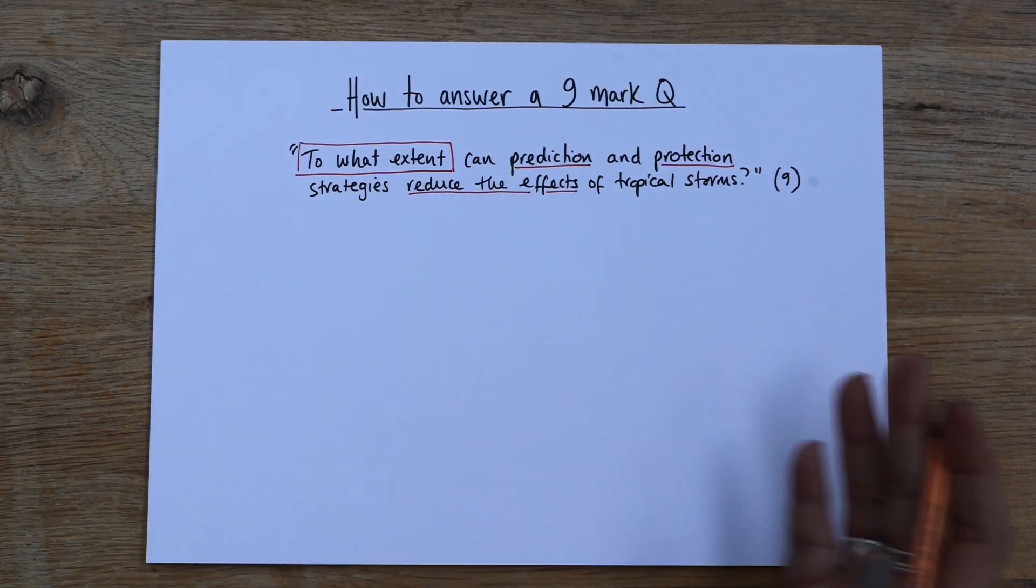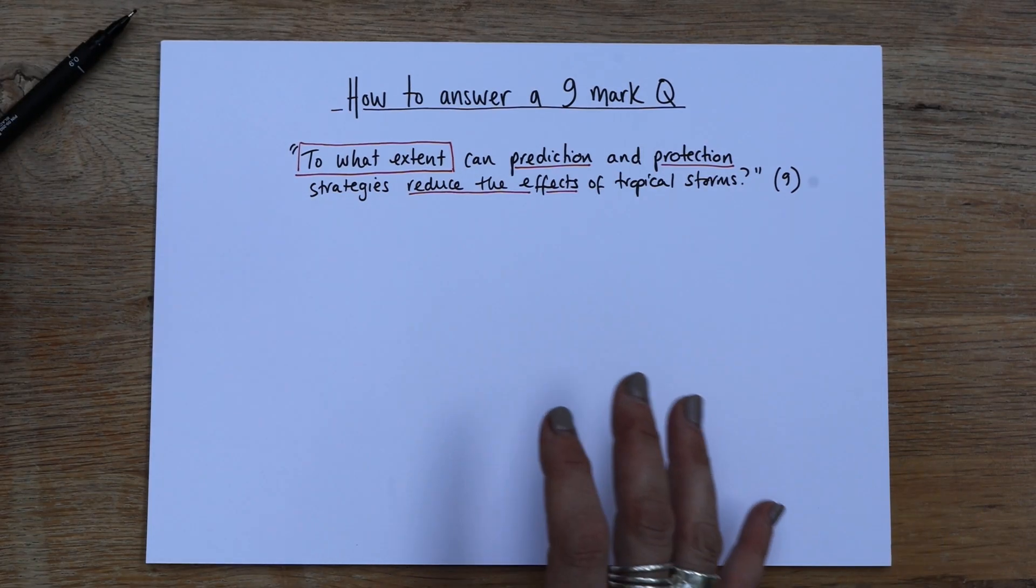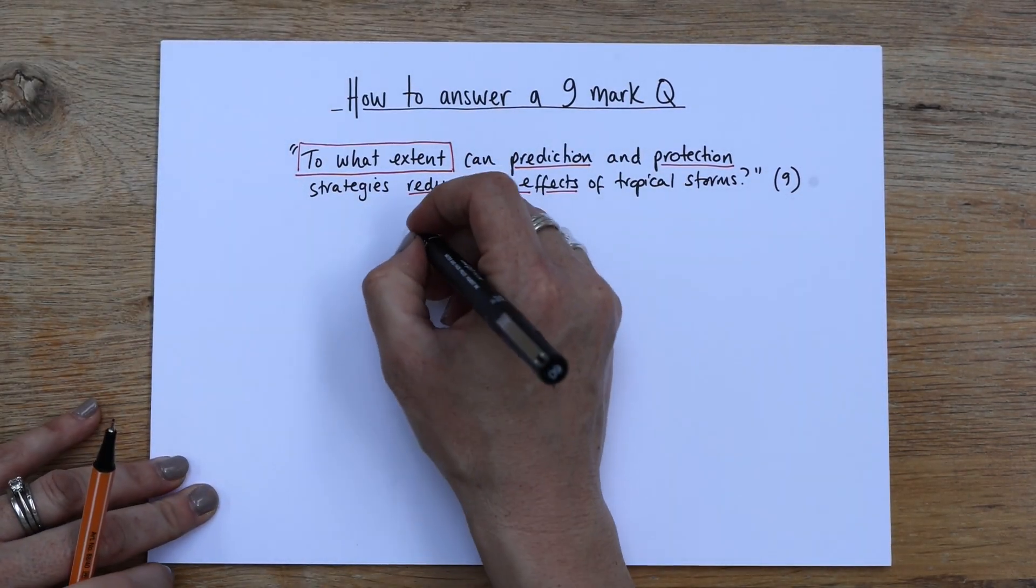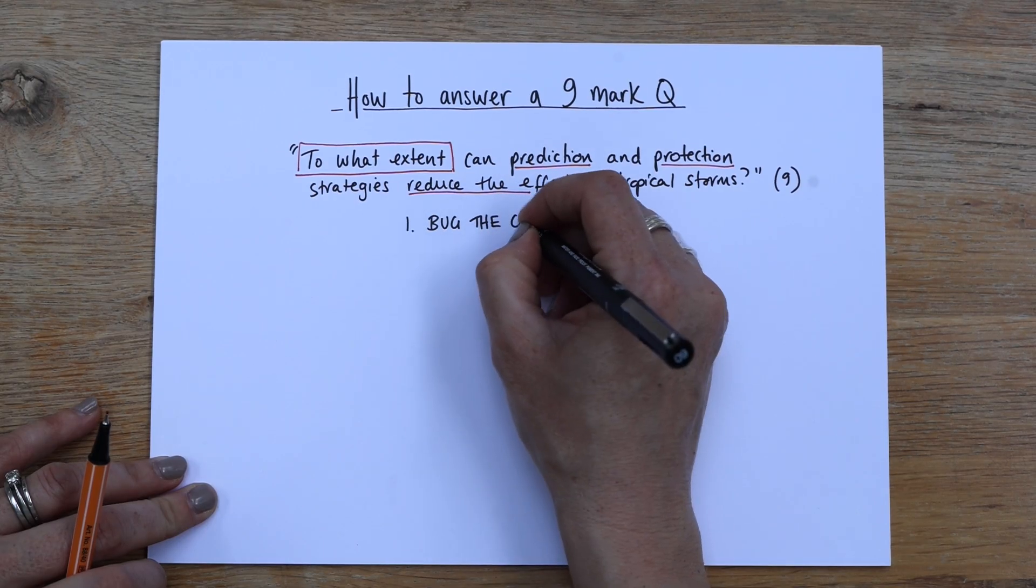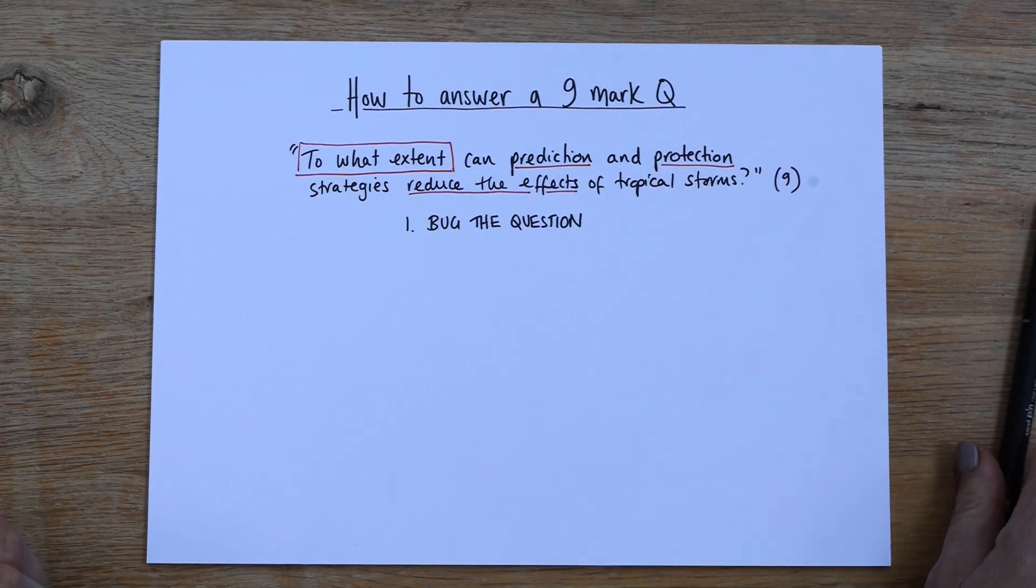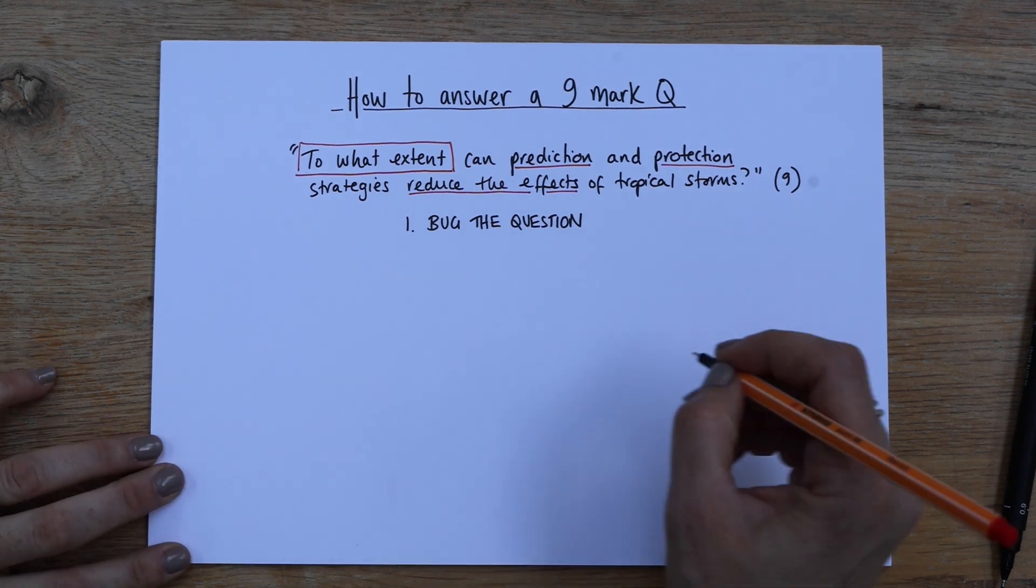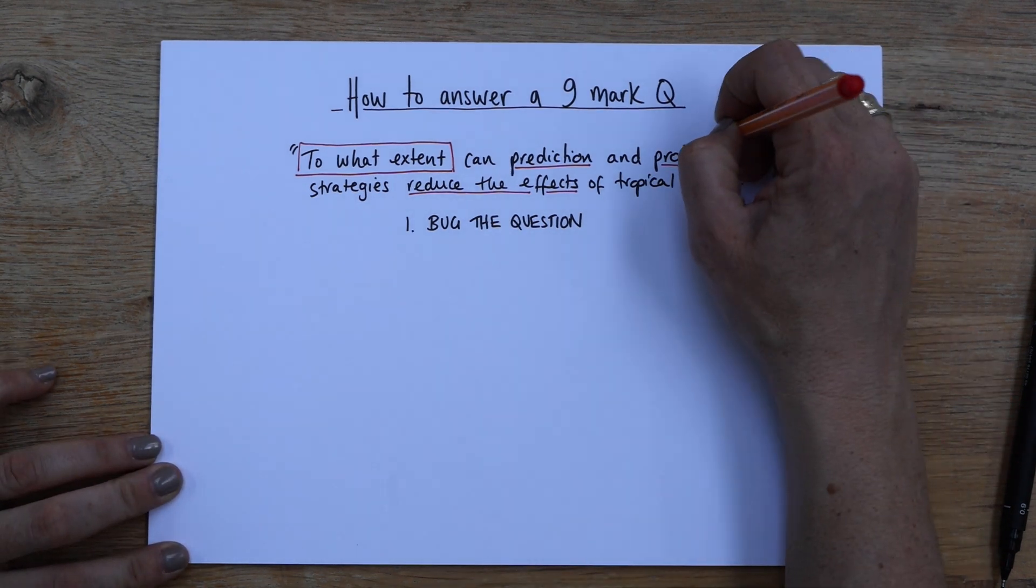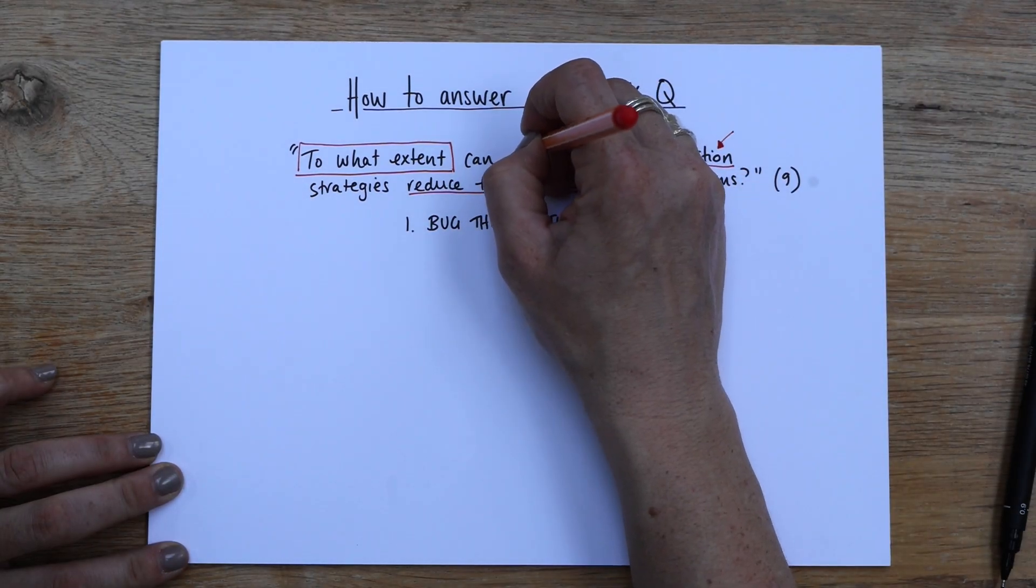Now there's not many students who would skip a question like this, especially a nice one like this from paper one. But just in case you were thinking of skipping this question, let me show you how easy it is to answer. So the first thing was to bug the question. Now we've done the underlining and the boxing, but we could do a bit better.